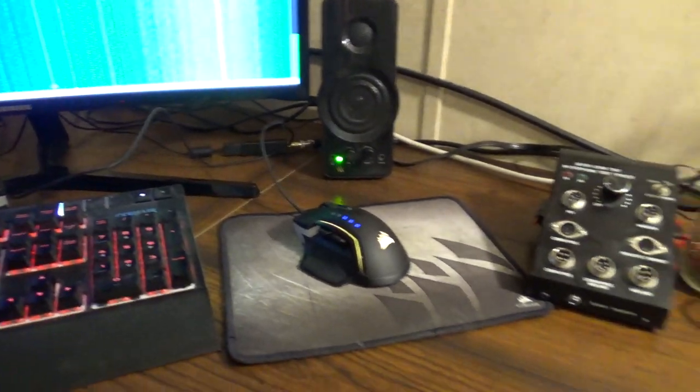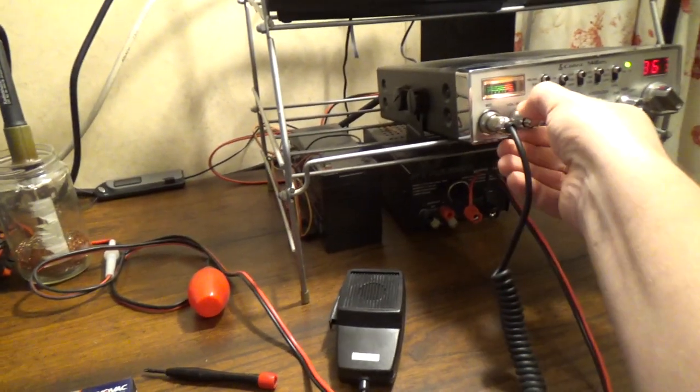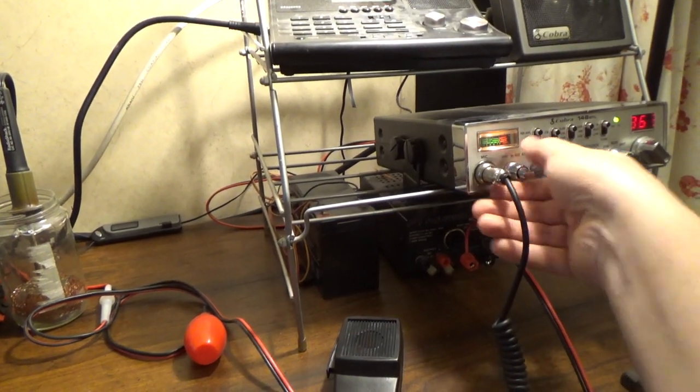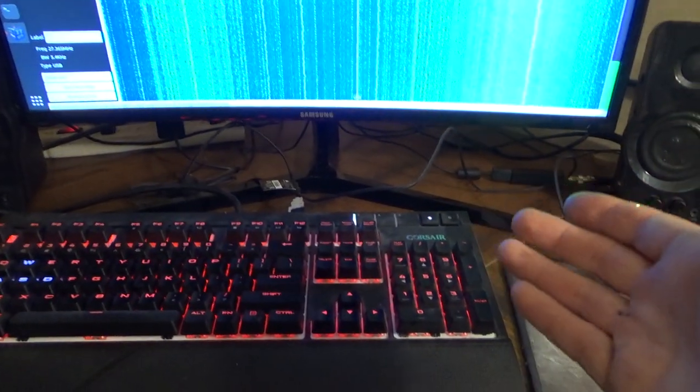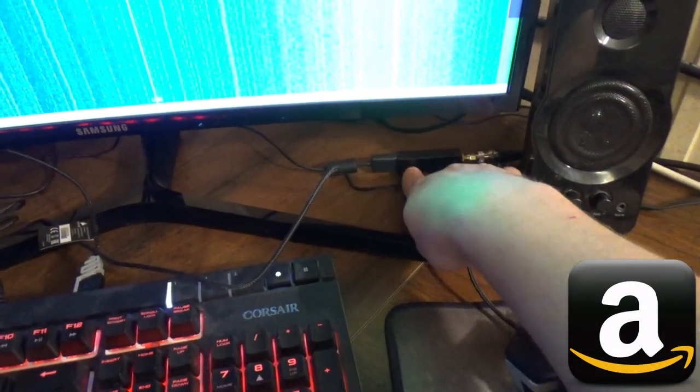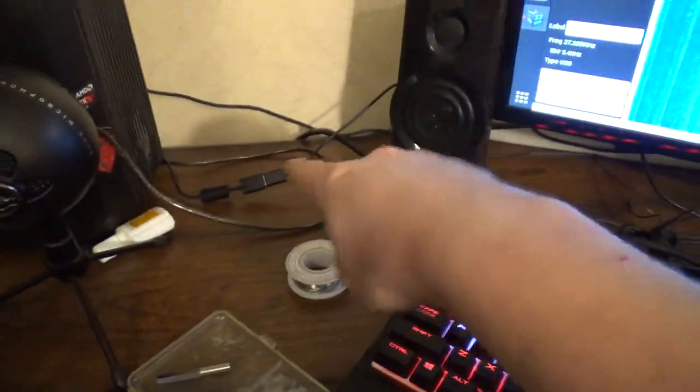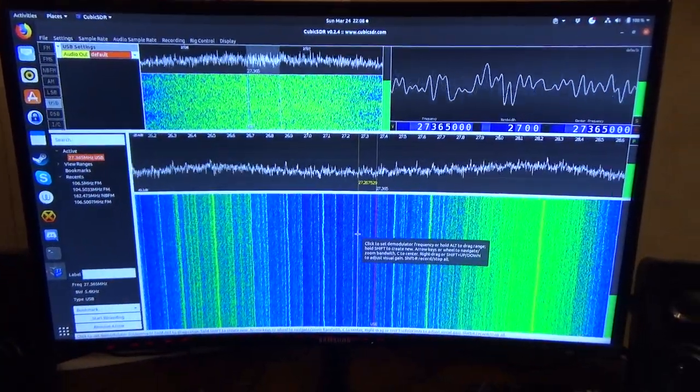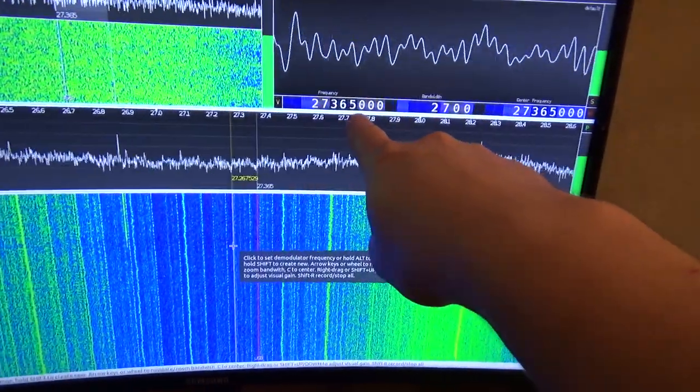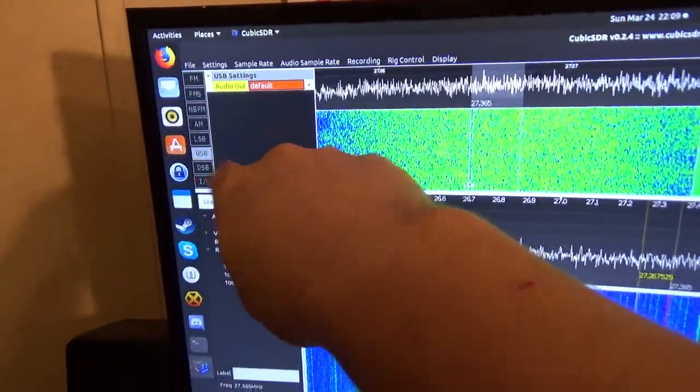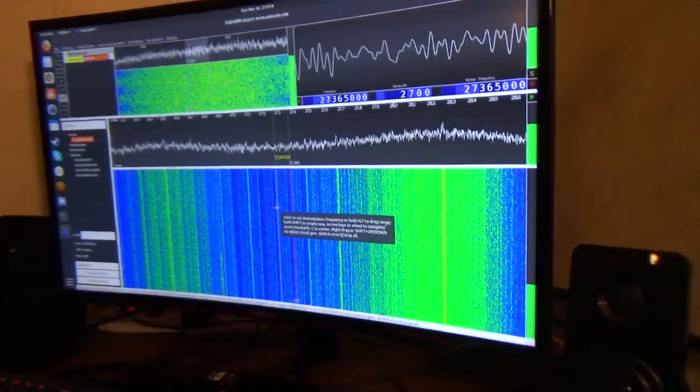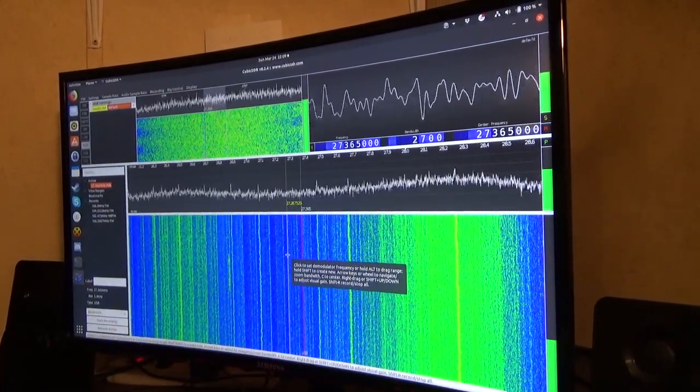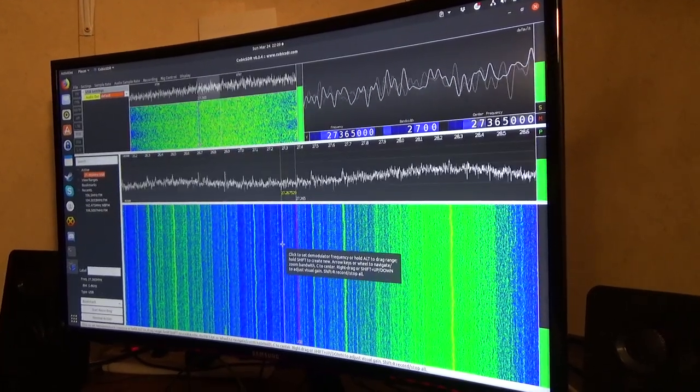So one thing you might rightfully wonder about is, how do you know it actually sounds good if there's nobody on the air to audio check you? Or even if, what if you just want to hear it for yourself? I've got a little NoElec software-defined radio receiver connected to my scanner antenna outside and connected to my PC here, which is running Cubic SDR on Ubuntu Linux. And so I've got it set to 27.365 upper sideband. And so we're going to give ourselves a little audio check here. See if we can't avoid feedback. And see how we sound.